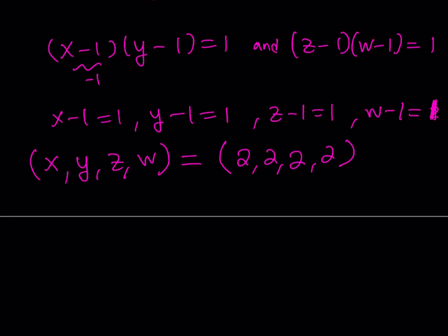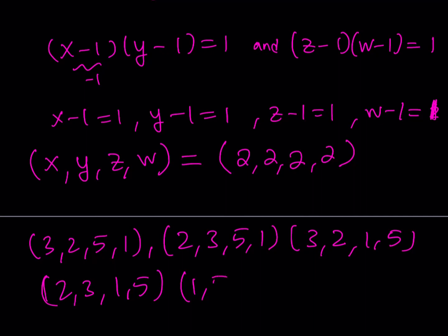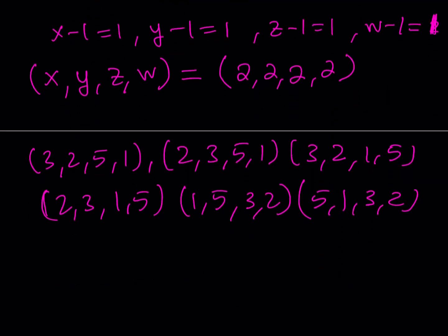And then the other one is going to be like (2, 3, 5, 1). So basically you can kind of rotate this a little bit. And we'll get (3, 2, 1, 5). We'll get (2, 3, 1, 5). We'll get (1, 5, 3, 2). And then we should be getting (5, 1, 3, 2). And now we have one more, (5, 1, 2, 3). Of course you add the (2, 2, 2, 2), and then you're going to get all the solutions. So basically this is going to be our solution set.